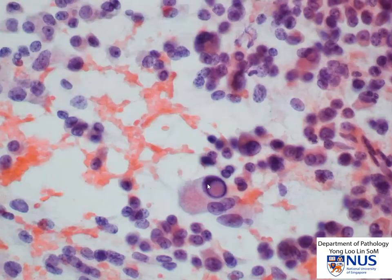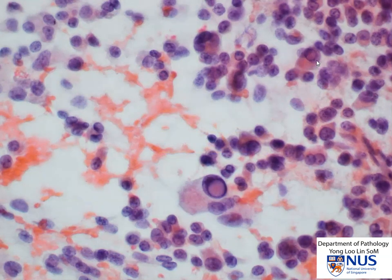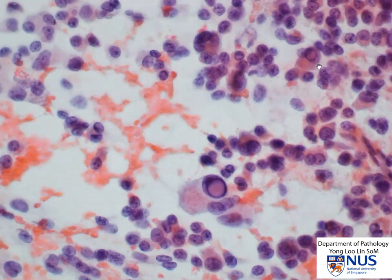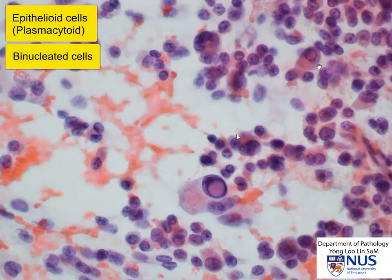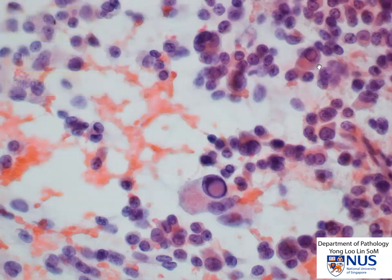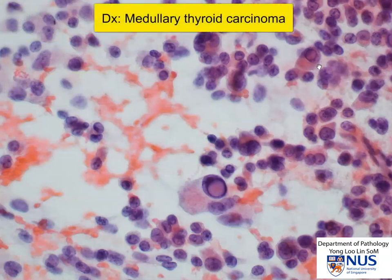Here we actually see a very well-formed intranuclear pseudo-inclusion, and probably there is one there as well when we focus up and down. So what we have is a very cellular smear with epithelioid cells, many of which are plasmacytoid. We have binucleated and multinucleated cells, occasional intranuclear inclusions, stippled salt and pepper chromatin, and an absence of colloid in the background. This is a classical appearance of medullary thyroid carcinoma.